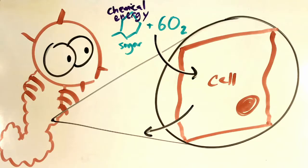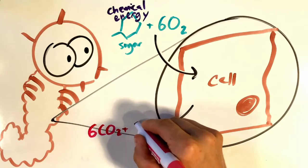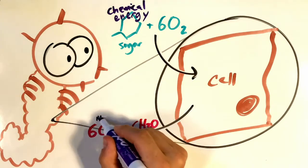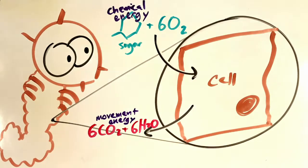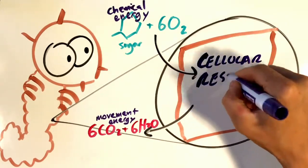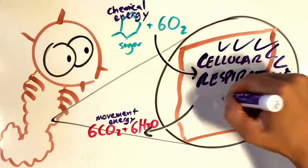And coming out of this cell as waste, we have carbon dioxide and water molecules, producing useful movement energy in the process. And this whole reaction that we see taking place in the cells of organisms, we call cellular respiration.